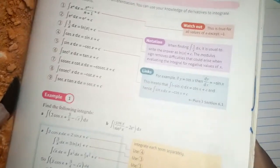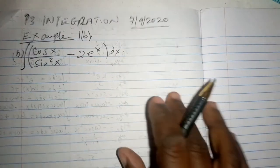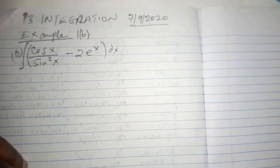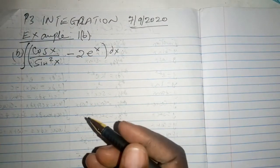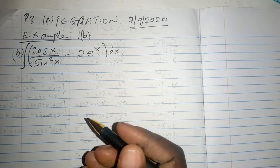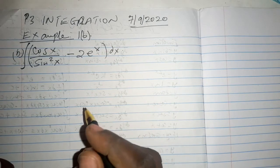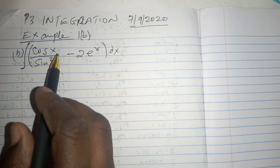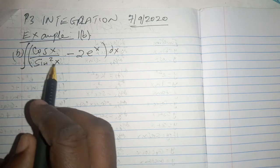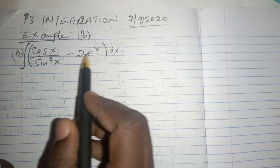We are dealing with topic number 7 and we explain example 1 part B in this video. Example 1 part B is talking about the cosine of x over the sine of sine square of x minus 2e raised to power x with respect to x.